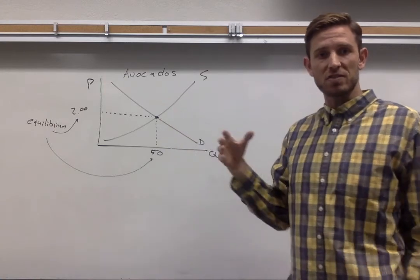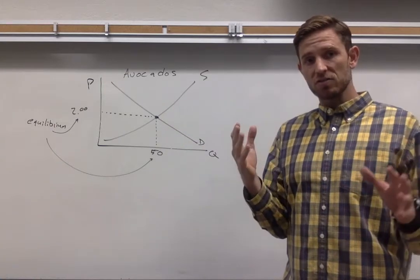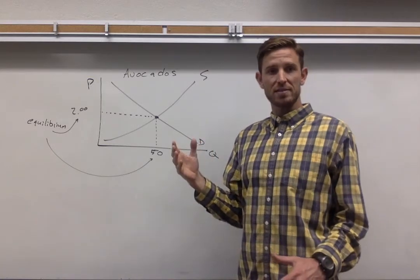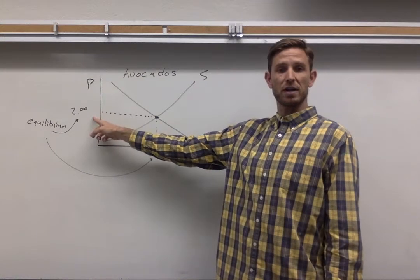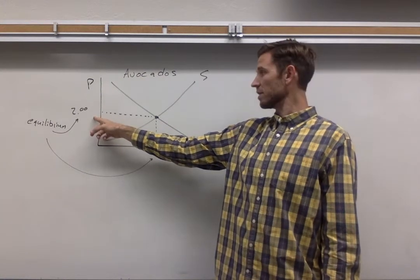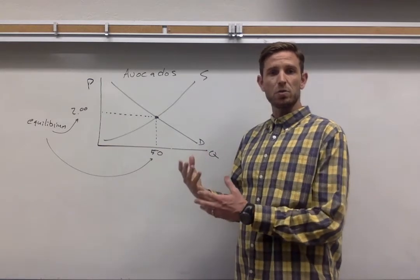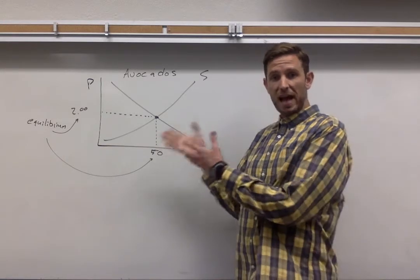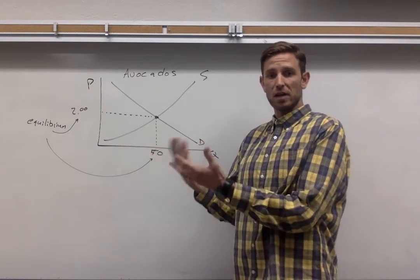What that means in simpler terms is that if we allow buyers and sellers to act in their own interests, we think that the actual price that people end up paying is going to be associated with this price right here. That looks like two bucks based on the setup that I've introduced. And then this quantity right there would be the equilibrium quantity. So this is going to be the actual price and amount of avocados that we actually observe.